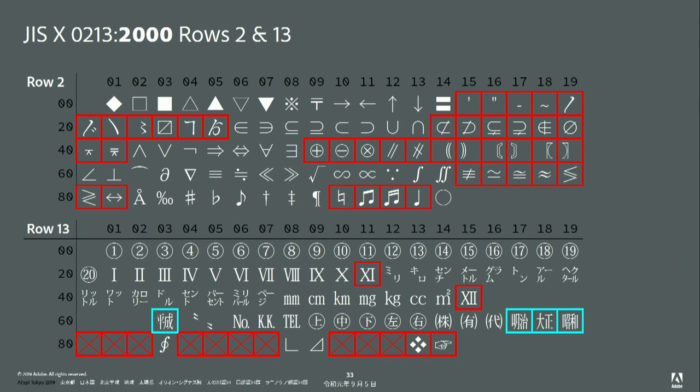Combining JIS X0208 and the new JIS standard, row 2 was completely filled up with various symbols. In row 13, they removed characters duplicated in row 2, essentially incorporating NEC row 13 while removing duplicates, adding four new characters, and also incorporating the position of the Heisei ligature form.